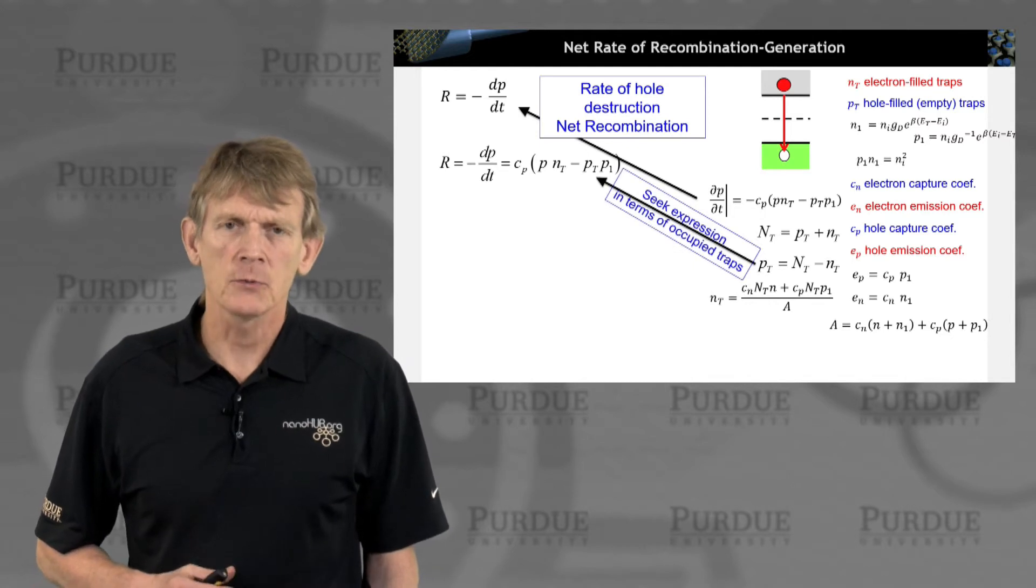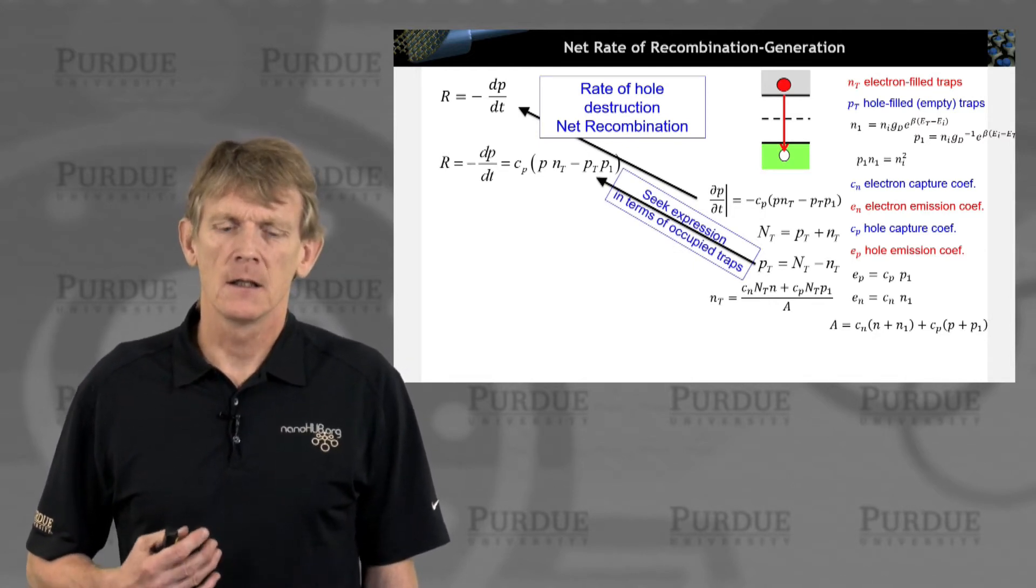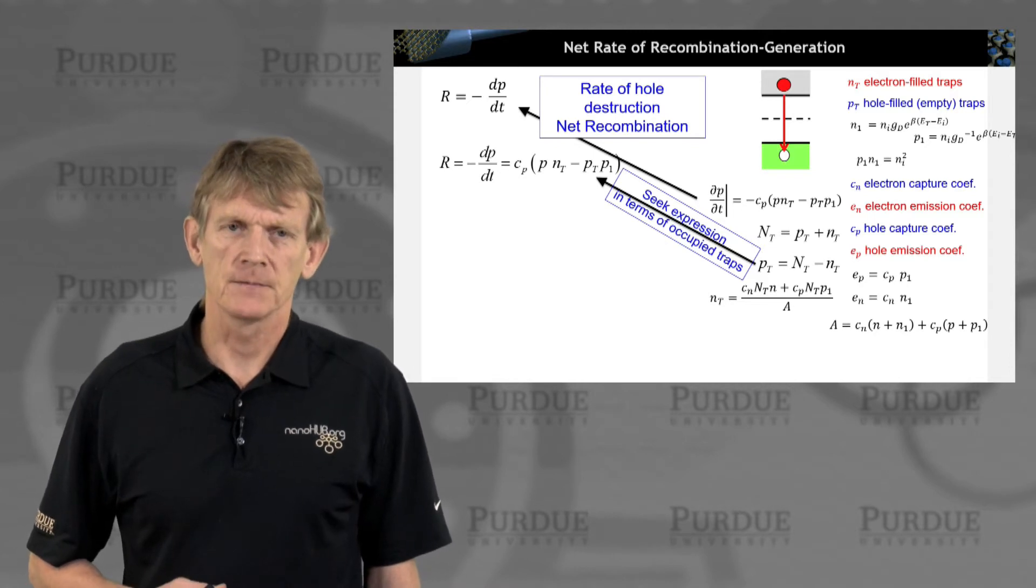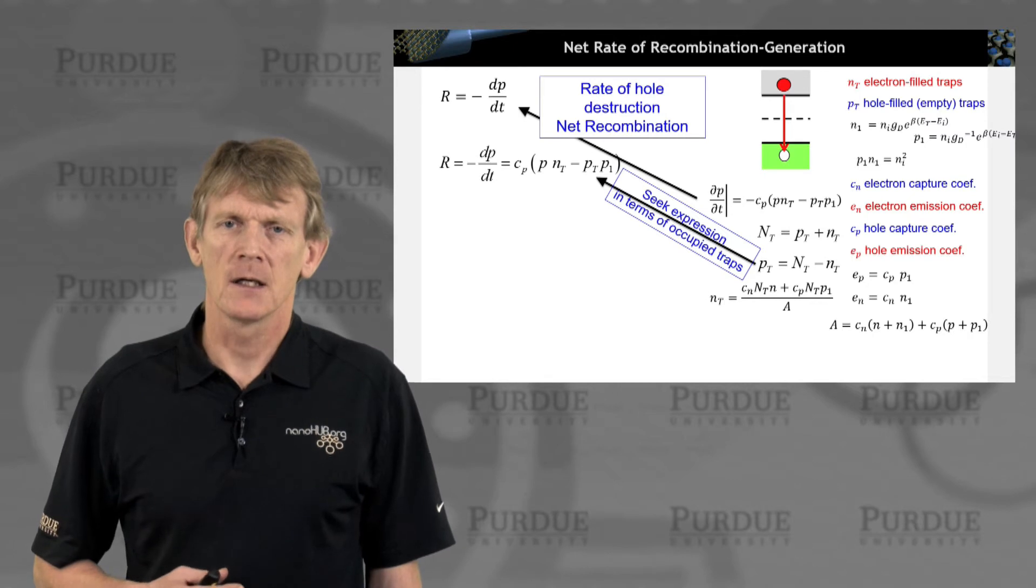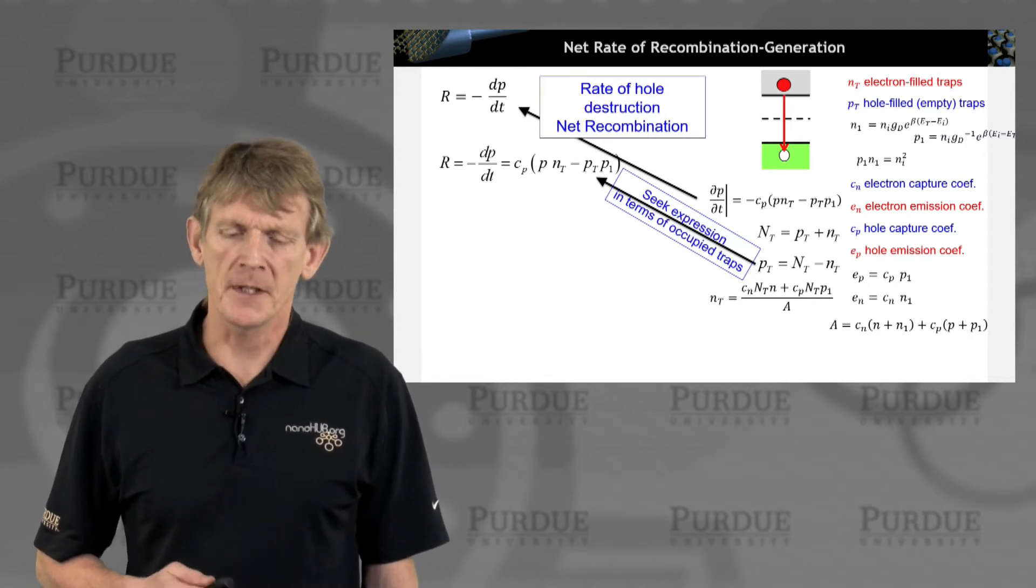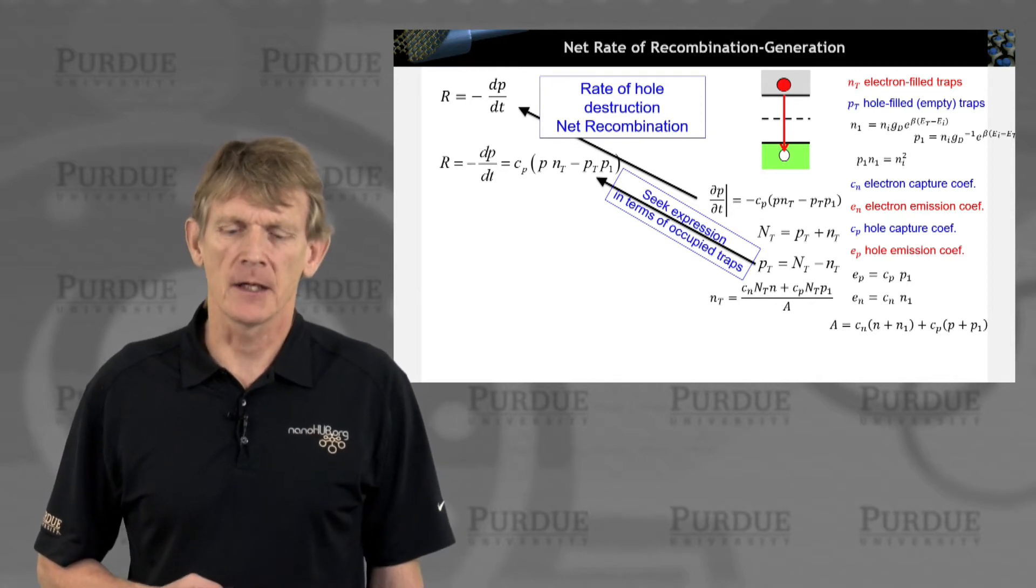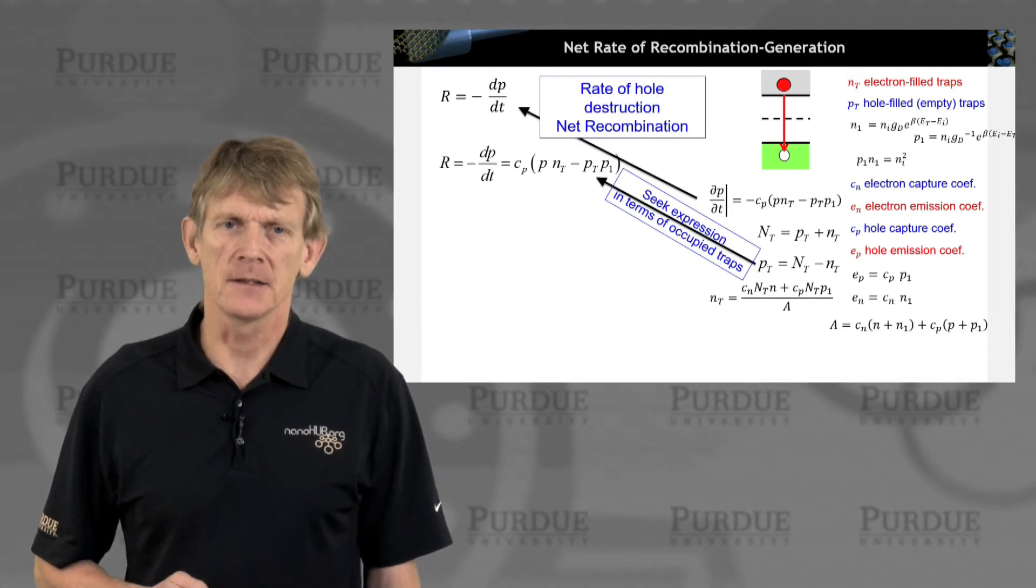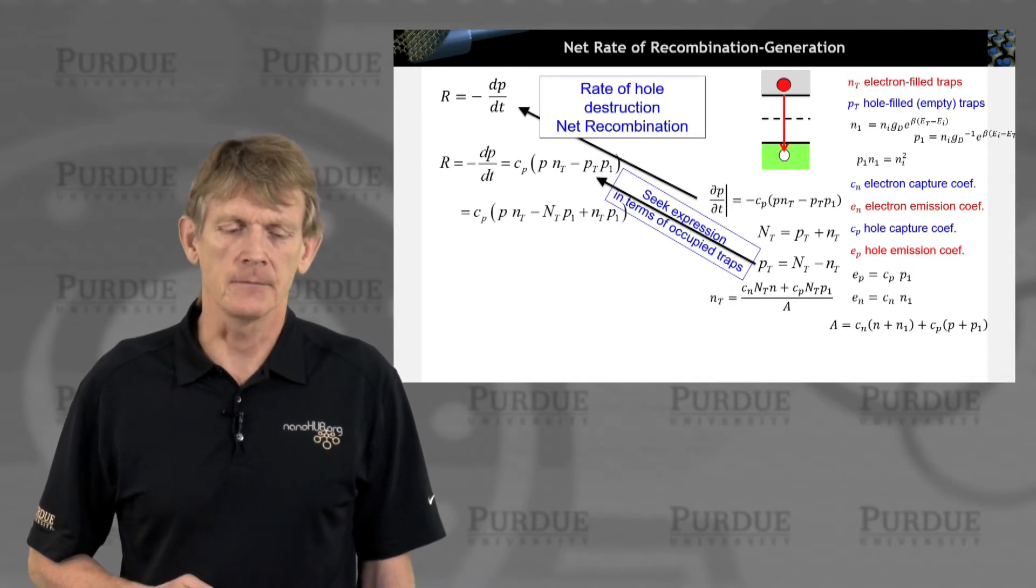We're just going to plug this expression in here. Now we're looking at expressions for occupied traps. We're going to look at Nt, number of occupied traps. Pt is dependent on Nt by capital Nt minus little nt. Total traps minus the occupied traps are the empty traps. So we're going to plug that in.